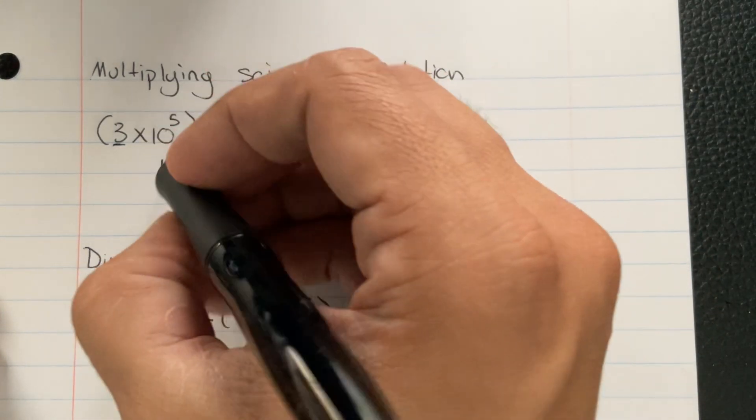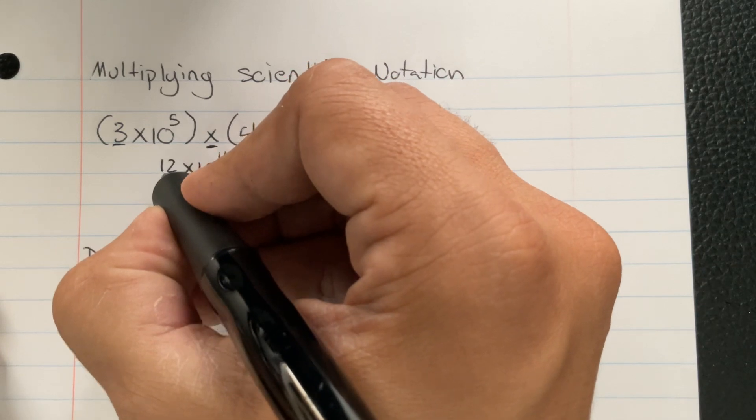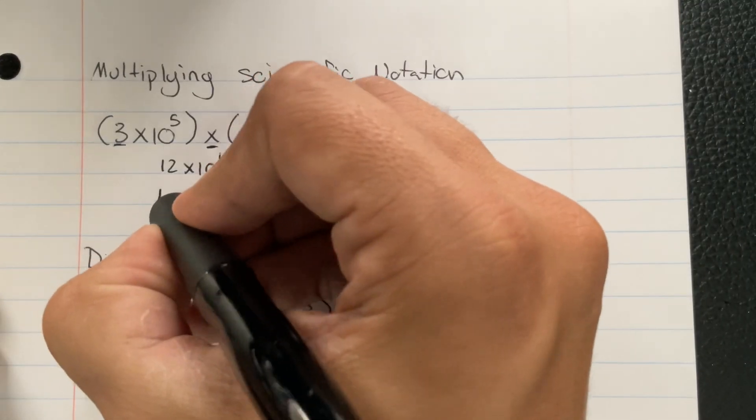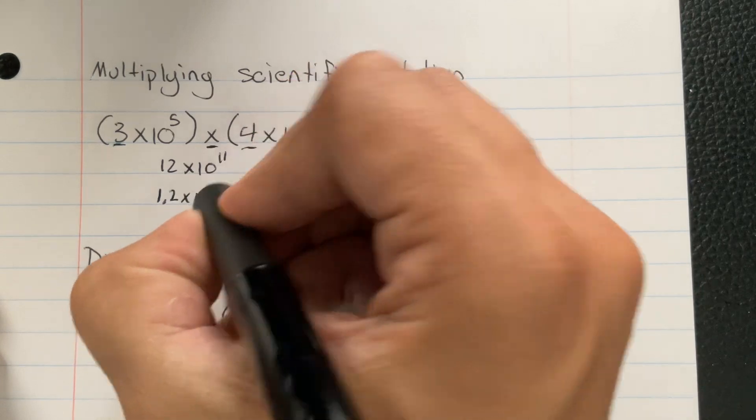but this number is too big. So what we're going to do is shift the decimal point over. So instead of 12, we're going to have 1.2 times 10.